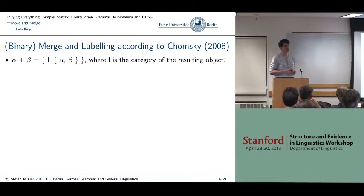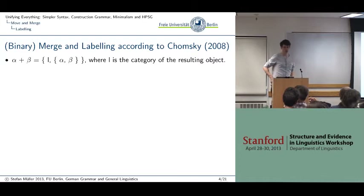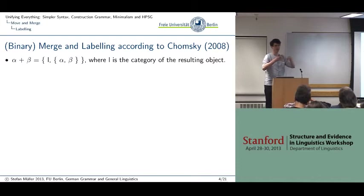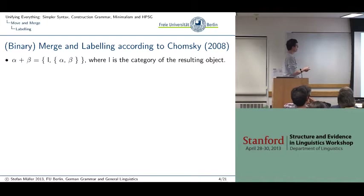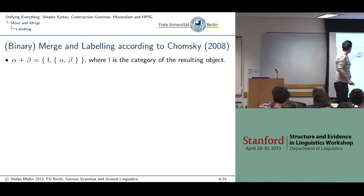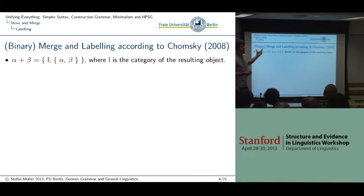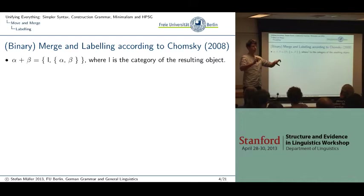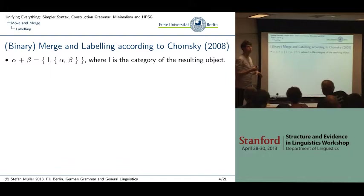In the next part I want to discuss Chomsky's theory of labeling. Chomsky argued that we have to get rid of X-bar theory because it's too much to assume to be in UG, and he tries to decouple things and make things simple in general. The first thing he did is this labeling: the idea is that we have two objects, alpha and beta, and if we combine them, we get a set of these two objects that has to have a label — basically the category of the resulting object.